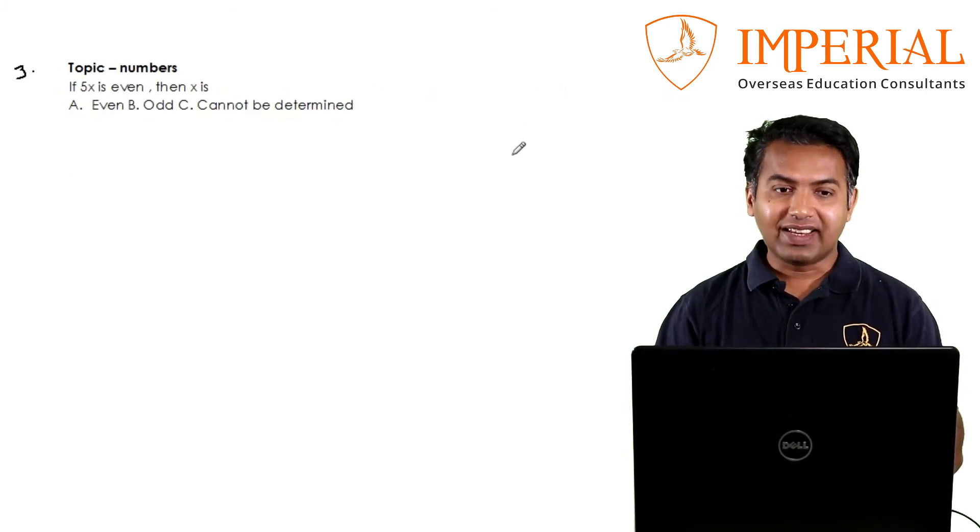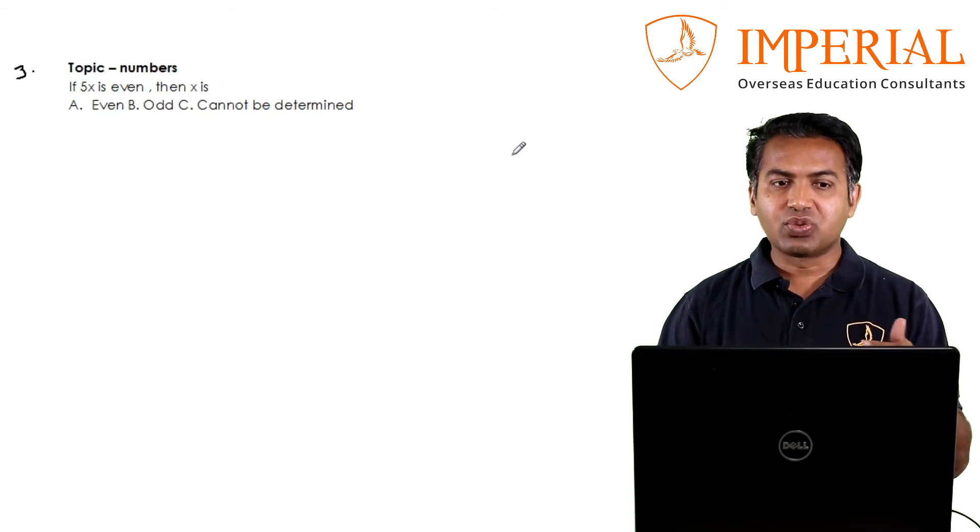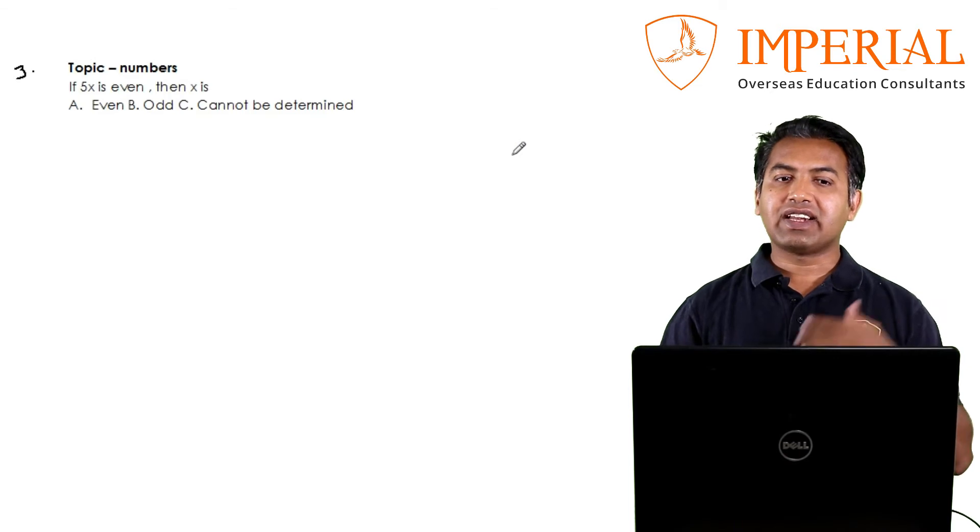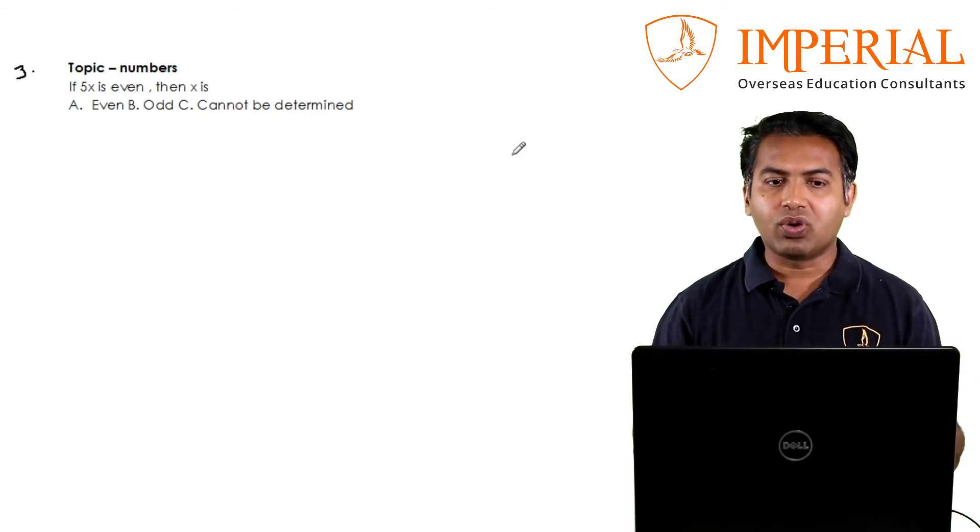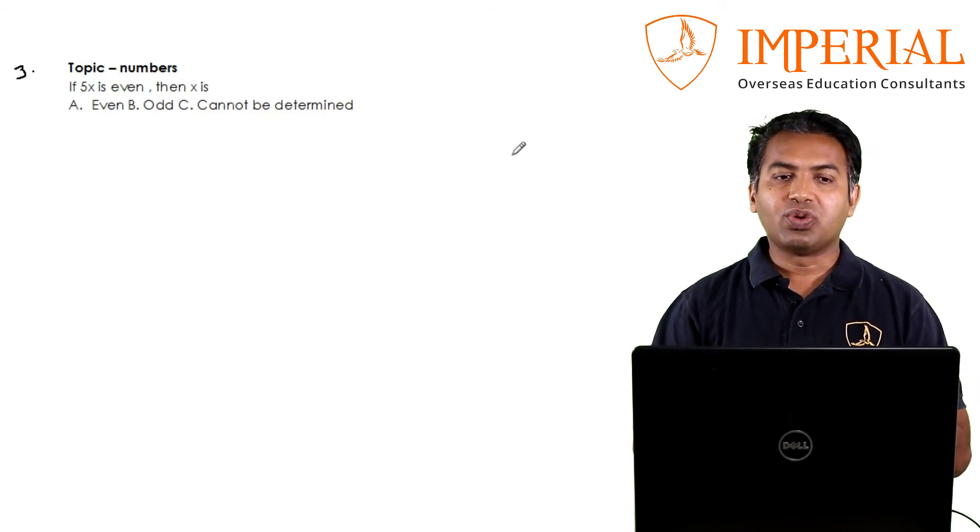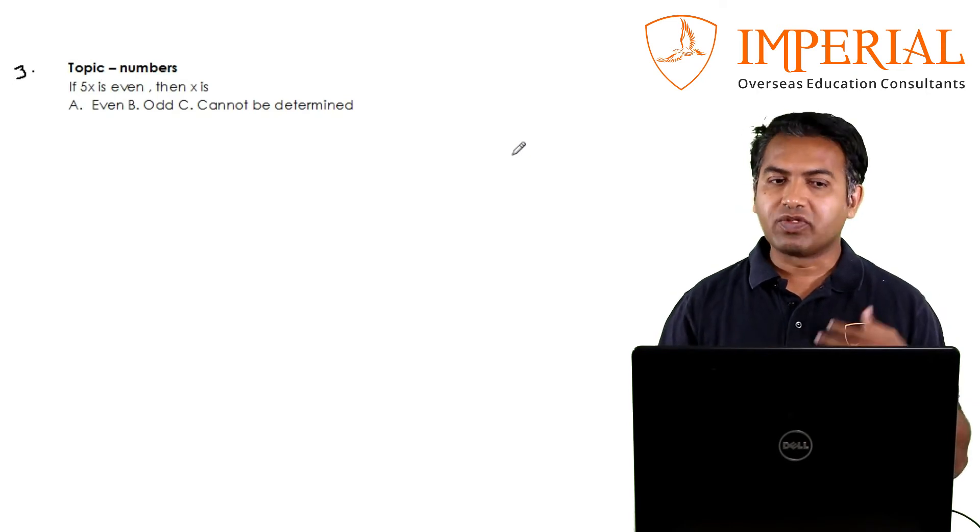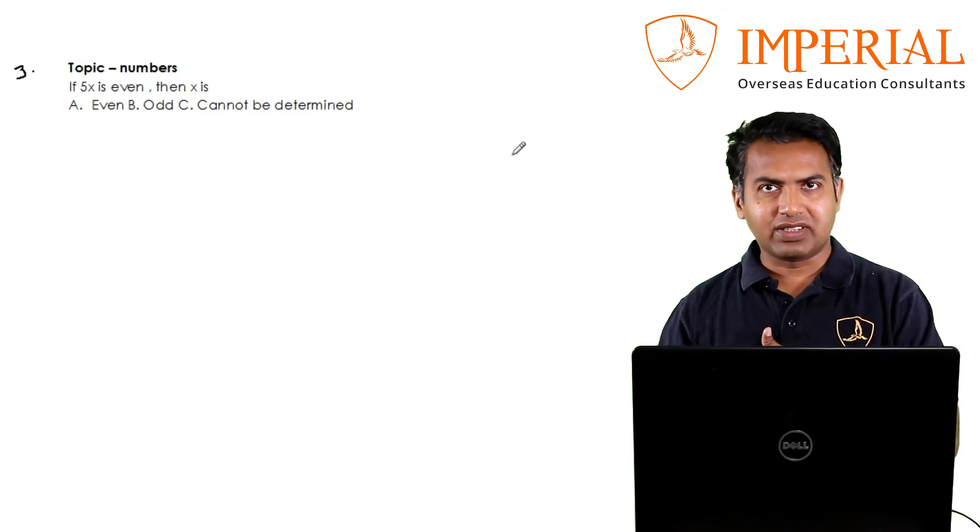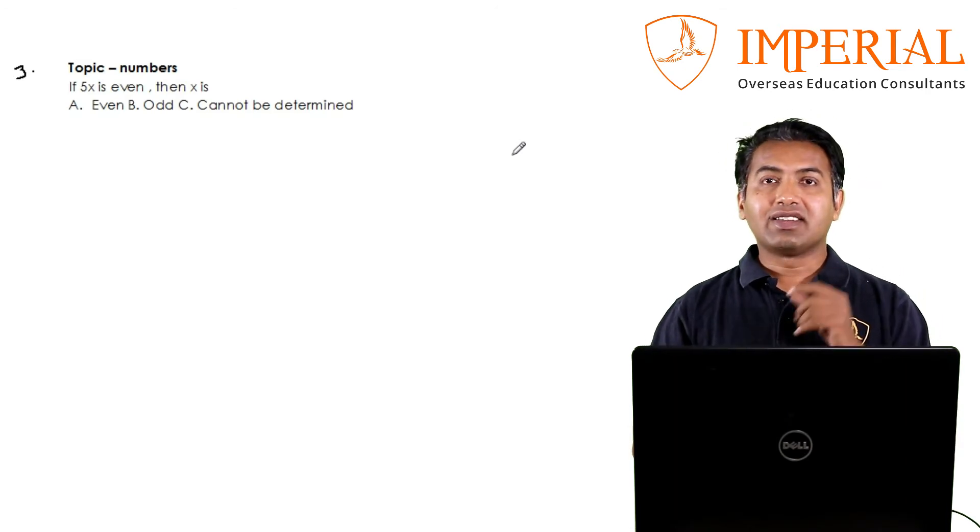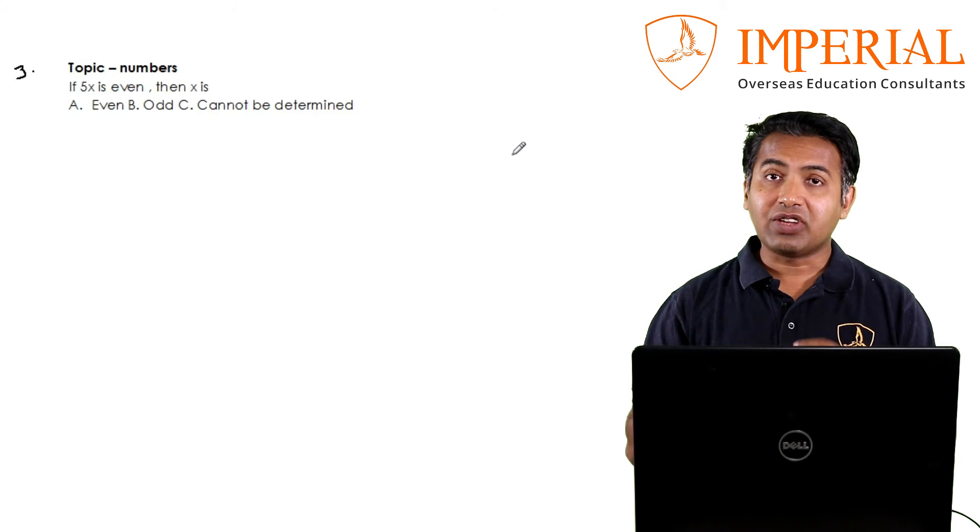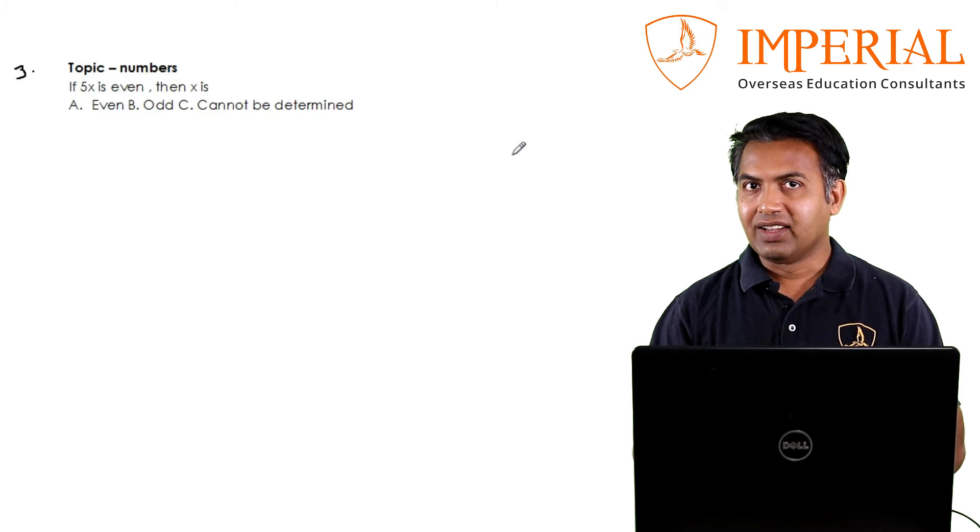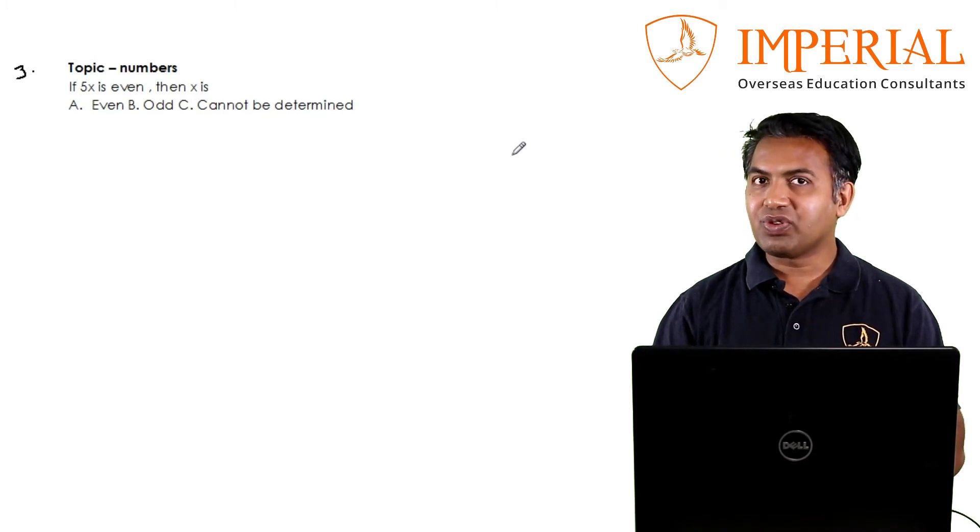The third one: this is not an actual question of a test, it's just to tell you the kind of thinking required. If 5x is even, then x is: even, odd, or cannot be determined? Obviously most students say x has to be even because 5 into even only will be even, right? This is where GRE tests you: are you making any assumptions? Can you tell me what assumption you're making?